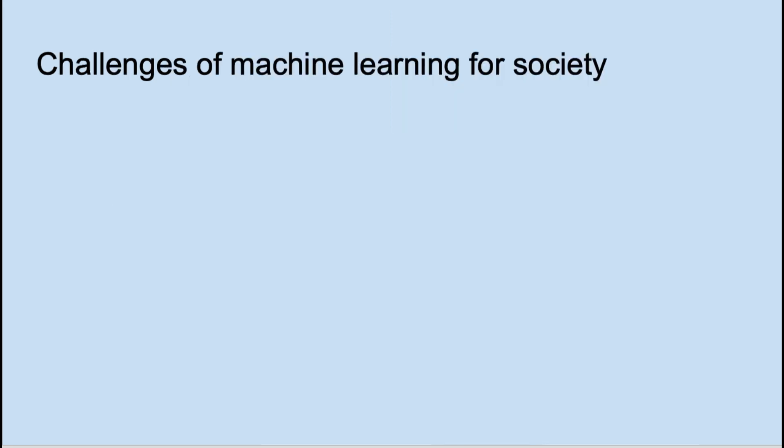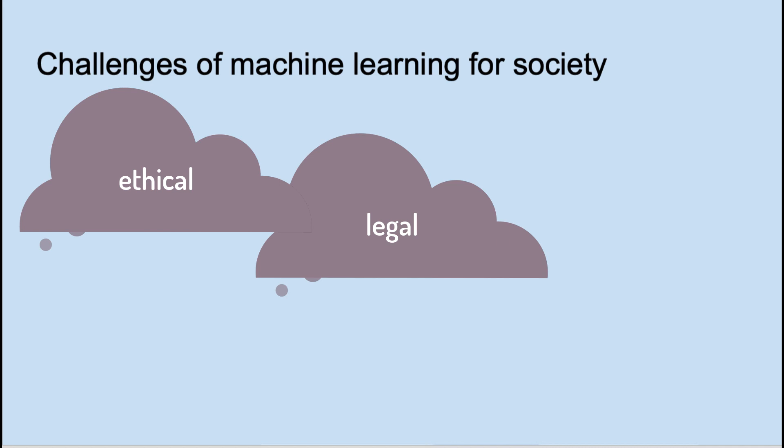Machine learning presents solutions to society, but also some potential problems. There are potential legal problems. If a company's algorithm does harm, to what extent is the company legally liable? There are ethical considerations. Are the algorithms fair? There have been cases in judicial sentencing applications and resume processing applications where the algorithms learned our human prejudices just from the data.